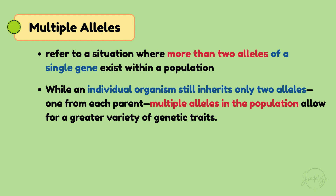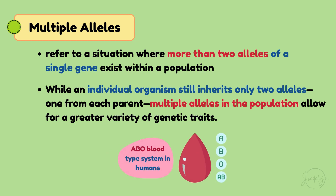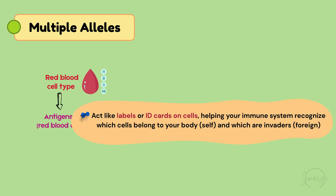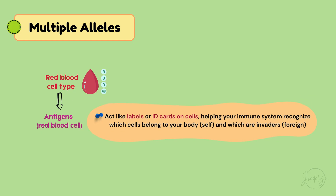A classic example of this is the ABO blood type system in humans. Your blood type — A, B, AB, or O — is determined by antigens on your red blood cells. Antigens act like labels or ID cards on cells, helping your immune system recognize which cells belong to your body (self) and which are invaders (foreign).